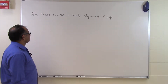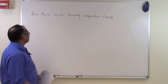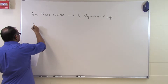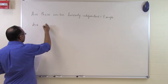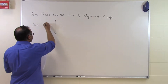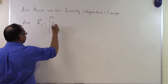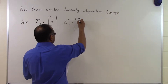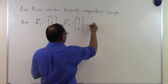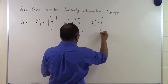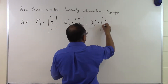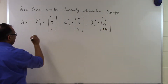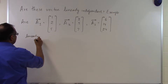In this segment we will look at an example to see if certain vectors are linearly independent. The problem statement is: vector A1 is given as (1, 2, 5), vector A2 is given as (2, 5, 7), and vector A3 is given as (6, 14, 24). Are these three vectors linearly independent?